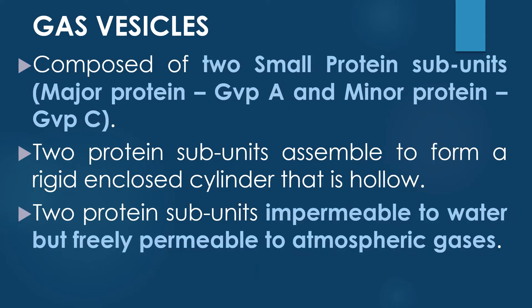The walls of the gas vesicles are composed entirely of two small protein subunits: one is the major protein and the other is the minor protein. The protein GVPa is called the major protein and the protein GVPc is called the minor protein. These two protein subunits are impermeable to water but freely permeable to various atmospheric gases.